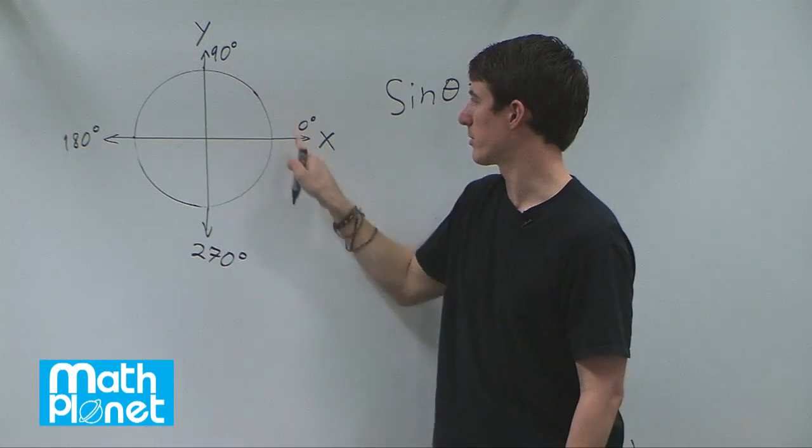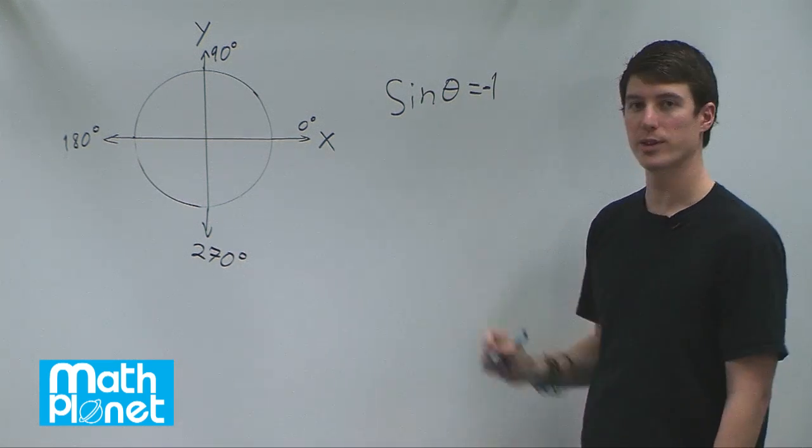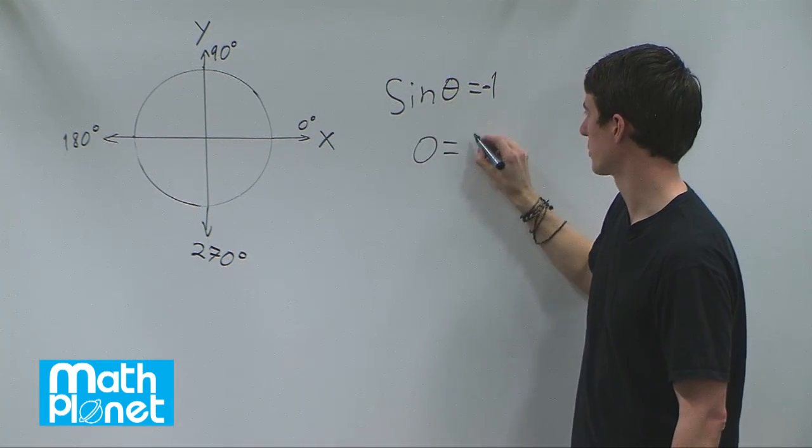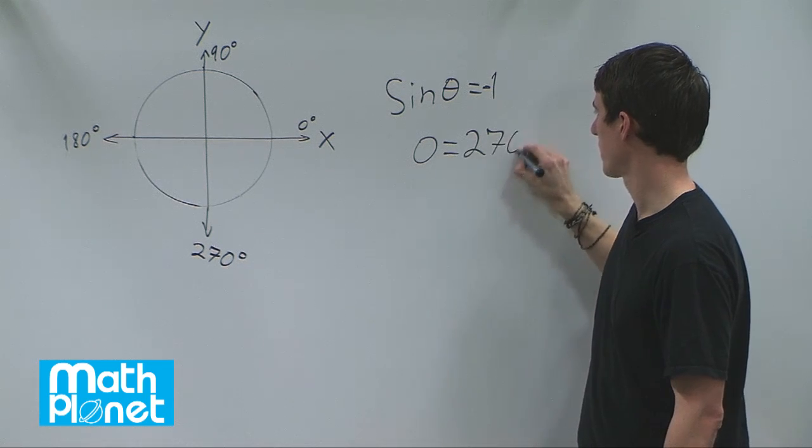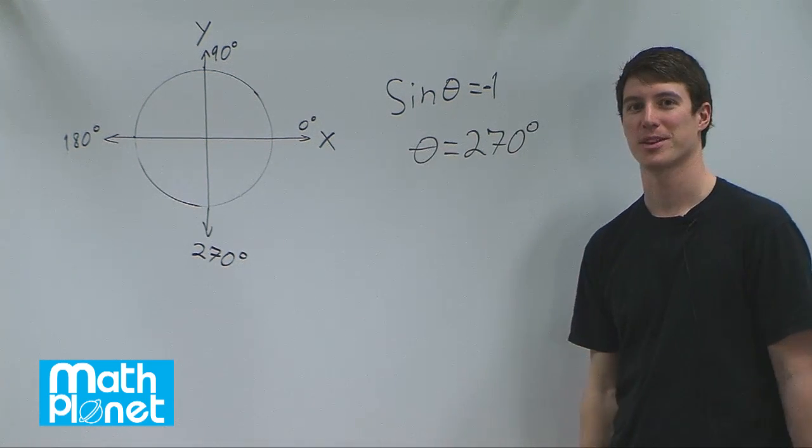So we're going all the way around from zero, ninety, one eighty, all the way to two hundred and seventy. So the only answer for this is theta equals two hundred and seventy degrees. That's it.